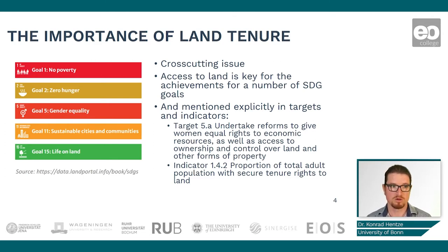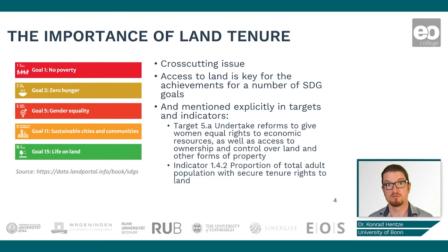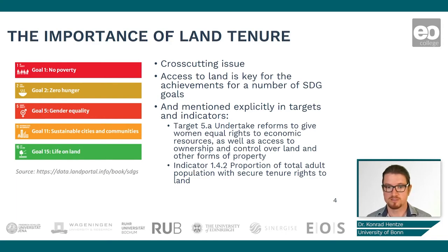The relevant SDGs are: No Poverty, Zero Hunger, Gender Equality, Sustainable Cities and Communities, and Life on Land. Land tenure and access to land and resources are explicitly mentioned in a number of targets and indicators. One example is Target 5a, where reforms should be undertaken to give women equal access to economic resources, among them land. Another is Indicator 14.2, which measures the proportion of the total adult population with secure tenure rights to land.